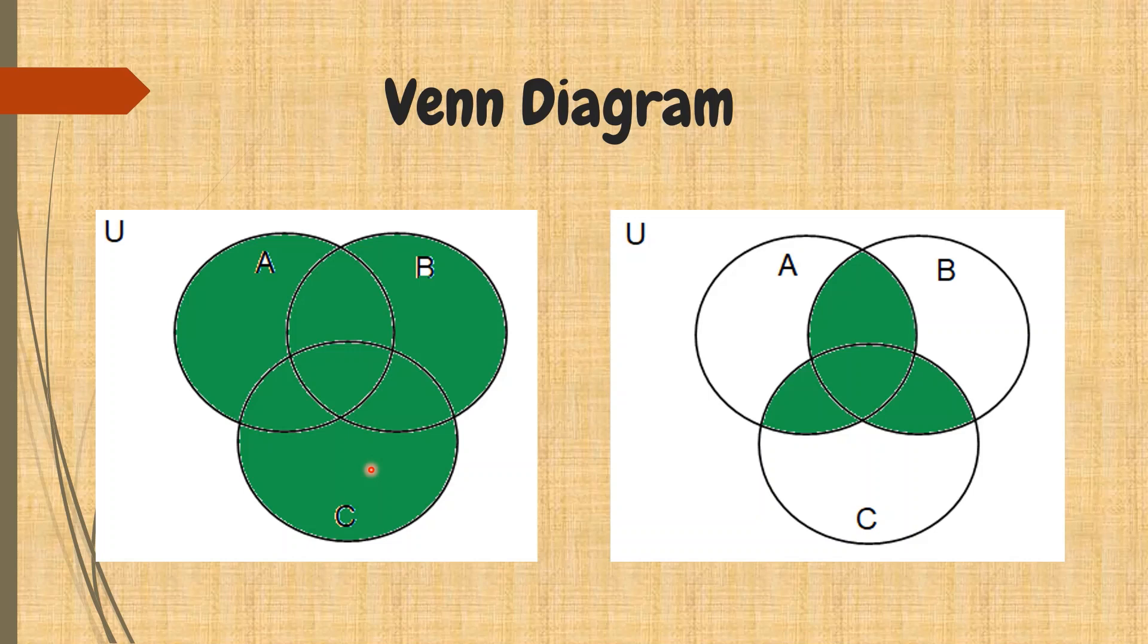Kung mapapansin nyo, may green shaded part ang buong bilog ng A, B, at C. While sa pangalawa naman, ang may shaded part lamang ay ang pagitan ng A at B, B at C, at C, at A. Mamaya, malalaman nyo ang pagkakaiba ng dalawa.